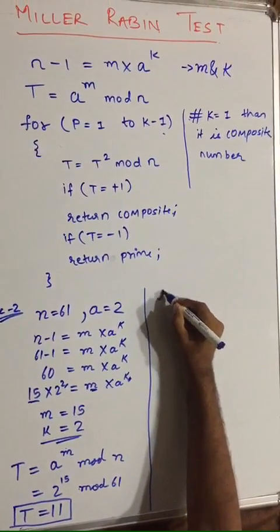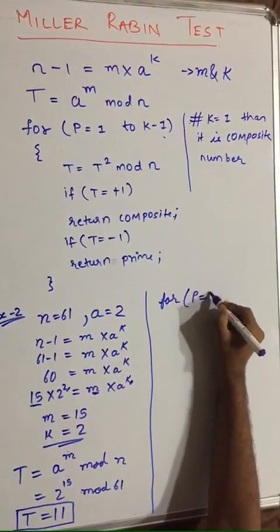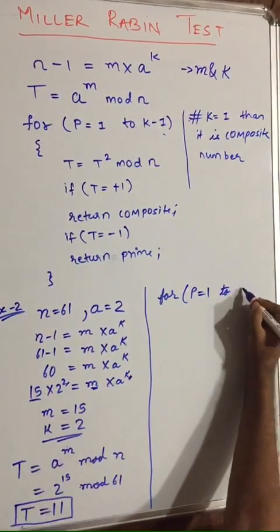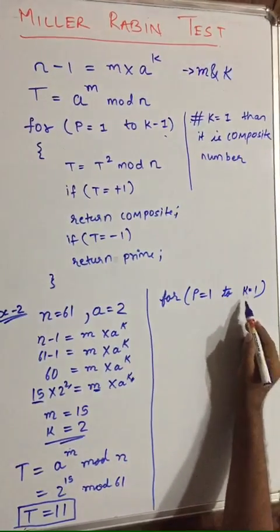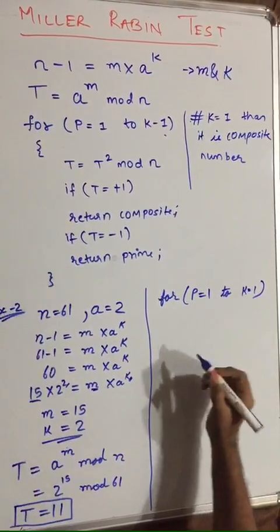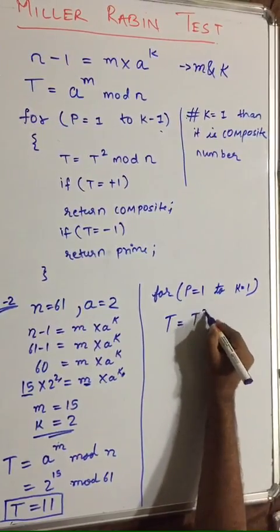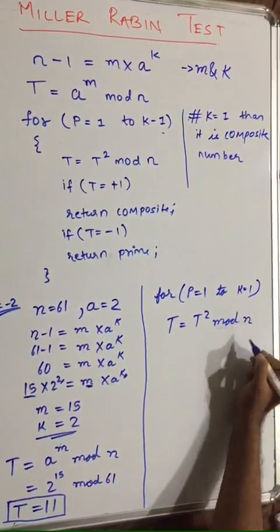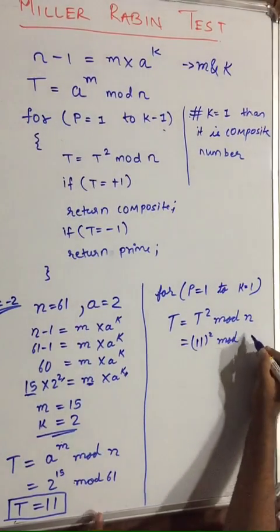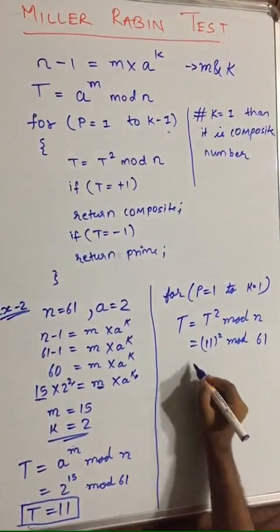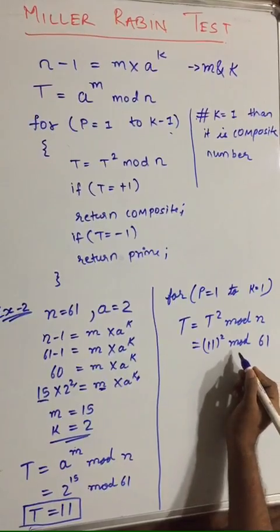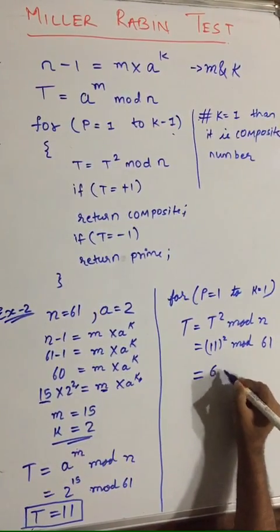In the for loop we iterate from p equal to 1 to p equal to k minus 1. Here our k is 2, so 2 minus 1 is 1, meaning the loop iterates only one time. So t is equal to t squared mod n, which is 11 squared mod 61. Solving this, we get the answer 60.